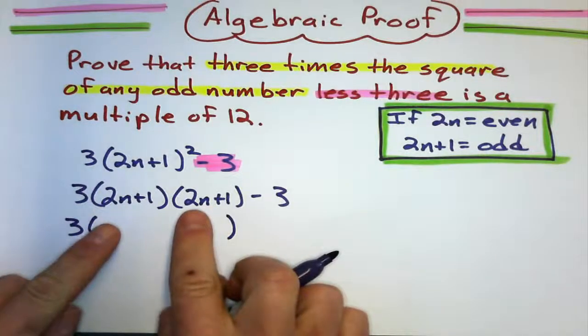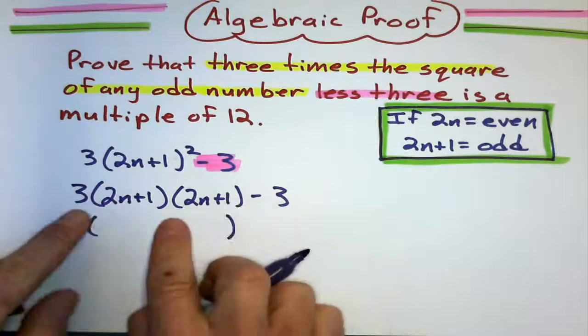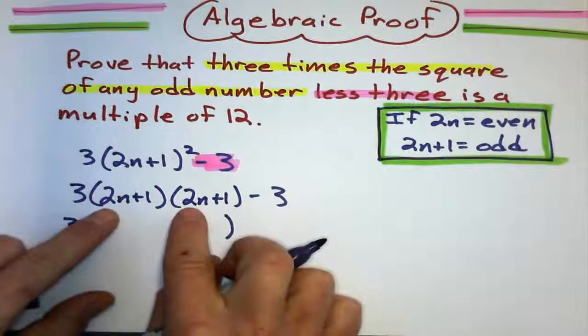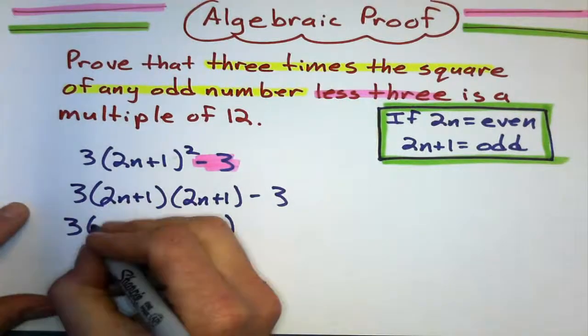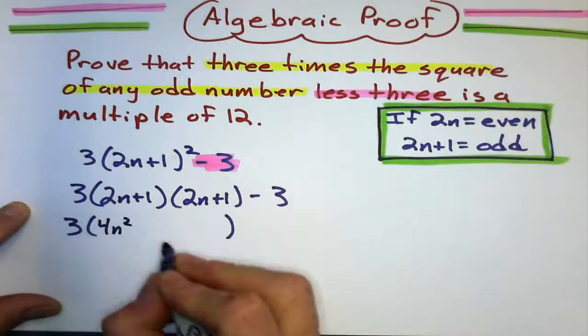First, I expand these brackets. 2n times 2n is 4n squared.